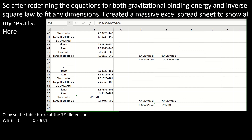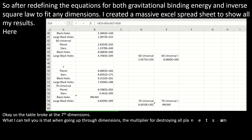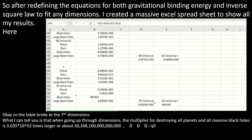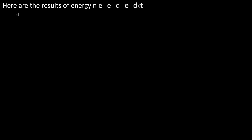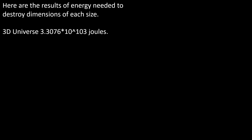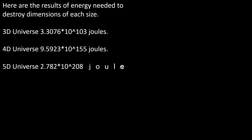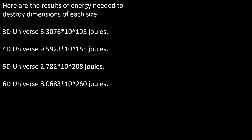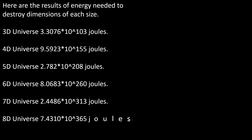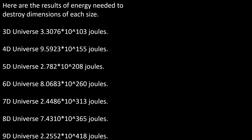The table broke at the 7th dimension. What I can tell you is that when going up through dimensions, the multiplier for destroying all planets and massive black holes is 3.035 times 10 to the 52 times larger. Here are the results of energy needed to destroy dimensions of each size: 3D universe — 3.3076 × 10^103 joules; 4D universe — 9.5923 × 10^155 joules; 5D universe — 2.782 × 10^208 joules; 6D universe — 8.0683 × 10^260 joules; 7D universe — 2.4486 × 10^313 joules; 8D universe — 7.4310 × 10^365 joules; 9D universe — 2.2552 × 10^418 joules.